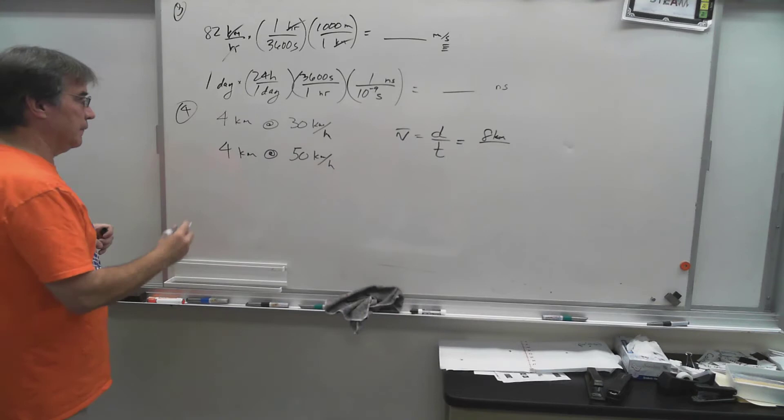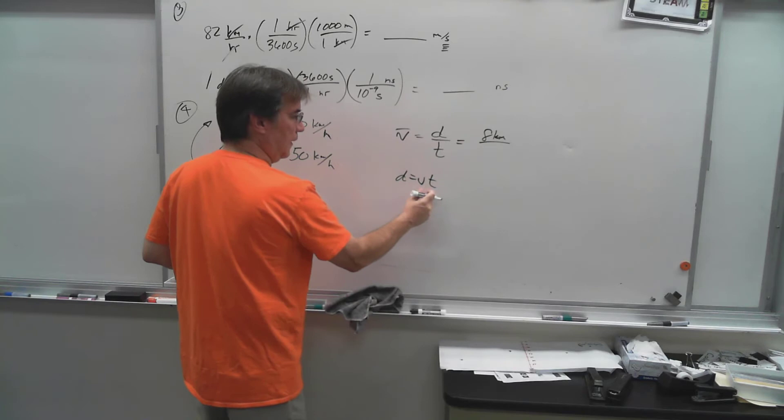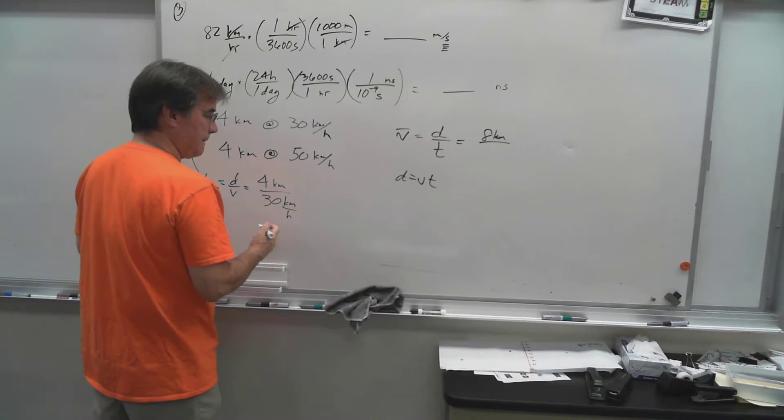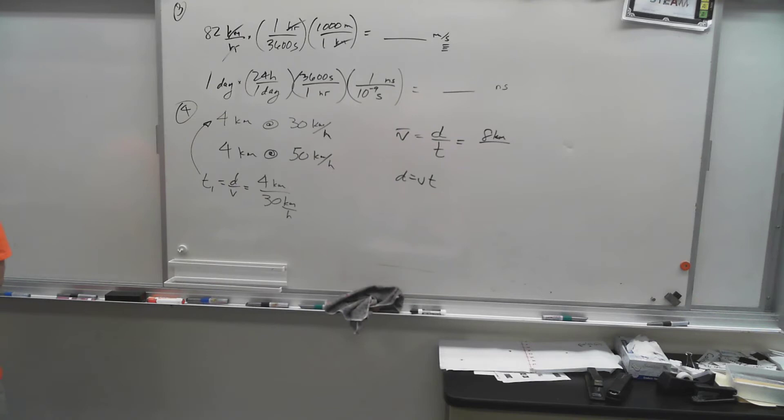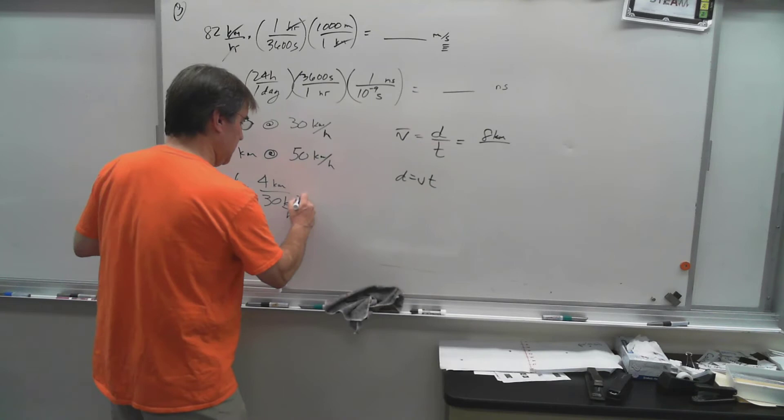And we know that displacement for the whole trip is eight kilometers. And we need to figure out that time. So let's go get T1 here. If I wanted time, again rearranging divot for time, it would be distance over velocity. So it would be four kilometers divided by 30 kilometers per hour. And when you work that out, you're going to get 0.1333 hours.